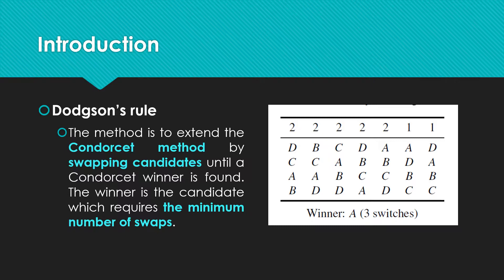consider a preference profile in this table. Each column represents a group of voters with the same preferences, given in descending order. The size of each group is specified in the first row. In this particular example, there are 12 voters and four alternatives A, B, C, and D, none of which is a Condorcet winner.